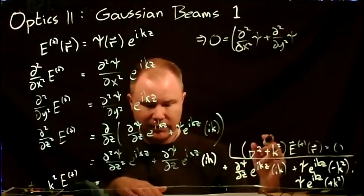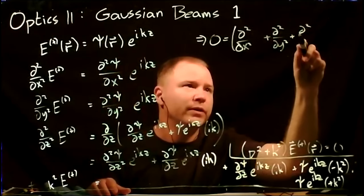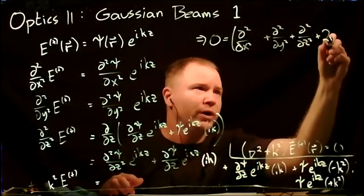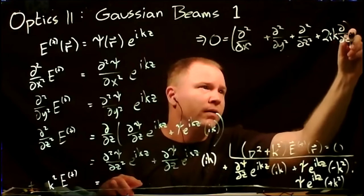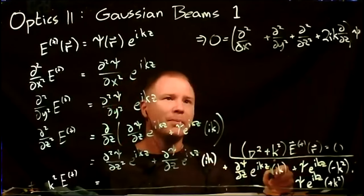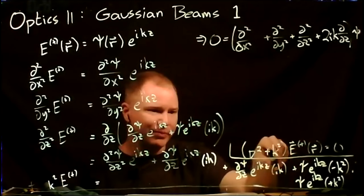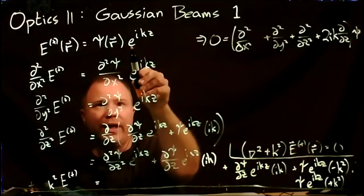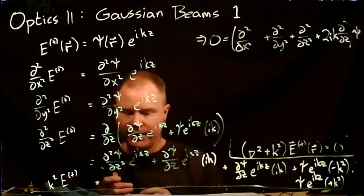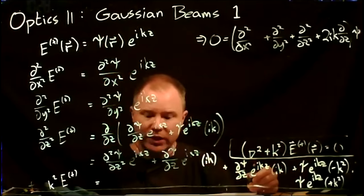This approximation means we can drop the second z-derivative term ∂²ψ/∂z², because it's much smaller than the 2ik·∂ψ/∂z term. We're restricting ourselves to beams that don't change profile on the order of a single wavelength - all changes in z are smoother than single wavelengths. This gives the paraxial wave equation.